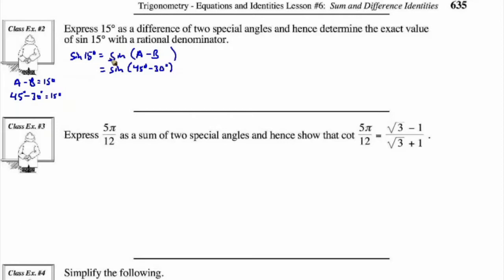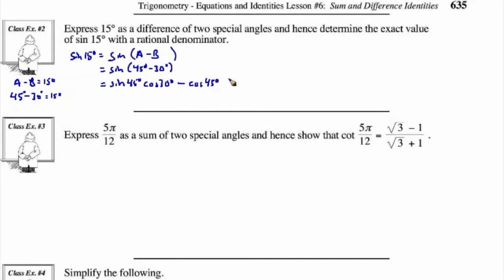With that in mind, we can continue using the difference identity for sine. So this is equal to sine of 45 degrees times cos of 30 degrees, minus cos of 45 degrees times sine of 30 degrees.